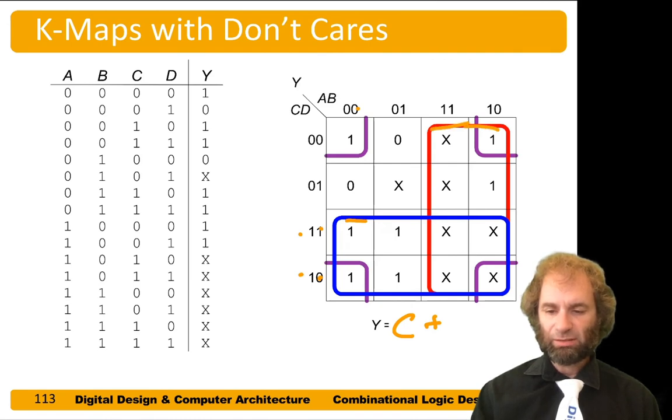The red block: A is one in both columns. B could be one or zero, so it doesn't matter. C and D could be any of the four possibilities, so they don't matter.